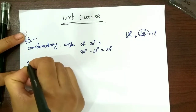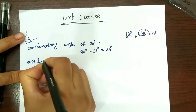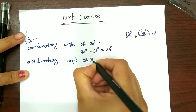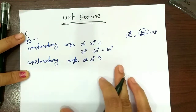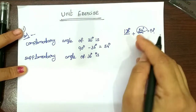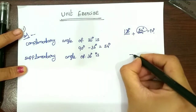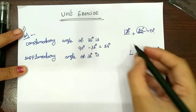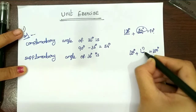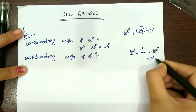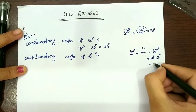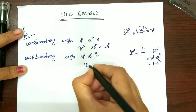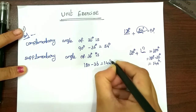Next, supplementary angles. For supplementary, we use 180 degrees. The angle is 36. We will find the supplementary angle. 180 minus 36 equals 144 degrees. So the supplementary angle is 144 degrees.